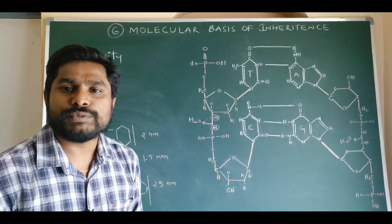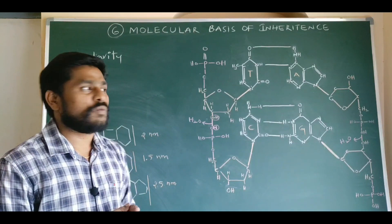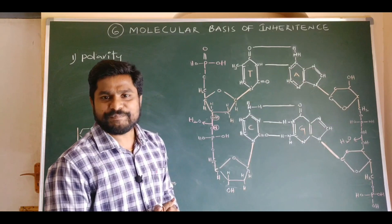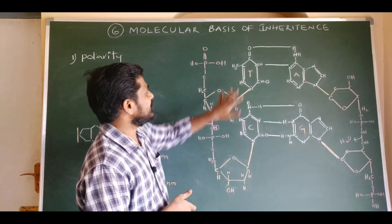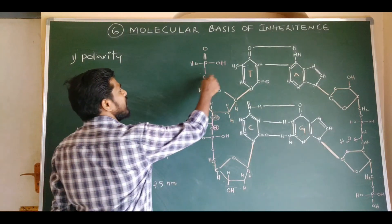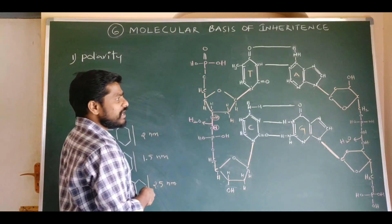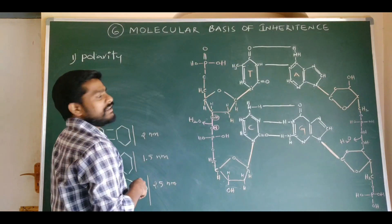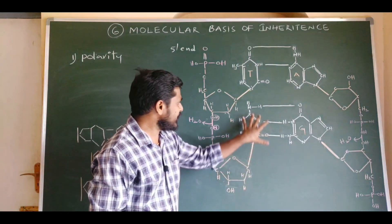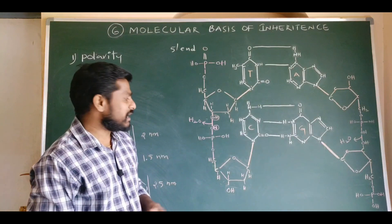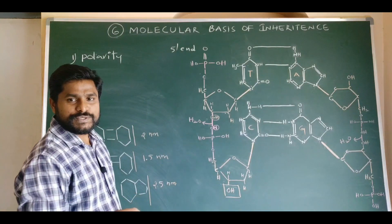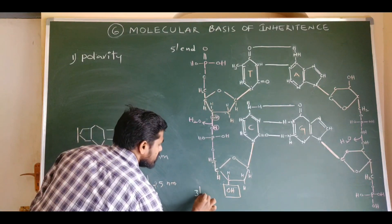From this chemical structure of DNA, we can also come to know some properties of the DNA molecule. One is polarity. Both strands of DNA show polarity. The terminal nucleotide at one end shows a free phosphate group at the fifth carbon atom of the pentose sugar, so that end of the DNA strand is said to be the 5' end.